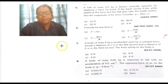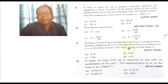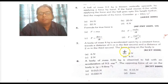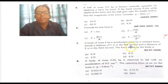Now let's see question number 7. What is given in this question? A body of mass 4 kg is accelerated upon by a constant force, travels a distance of 5 meters in the first second and a distance of 2 meters in the third second. The force acting on the body is — okay.